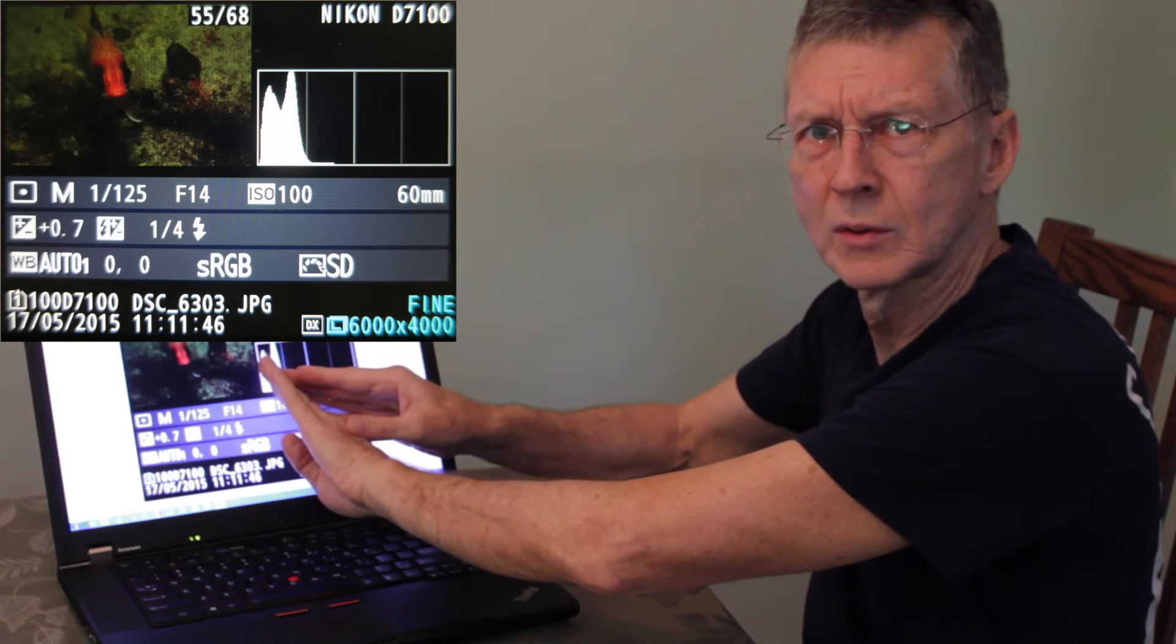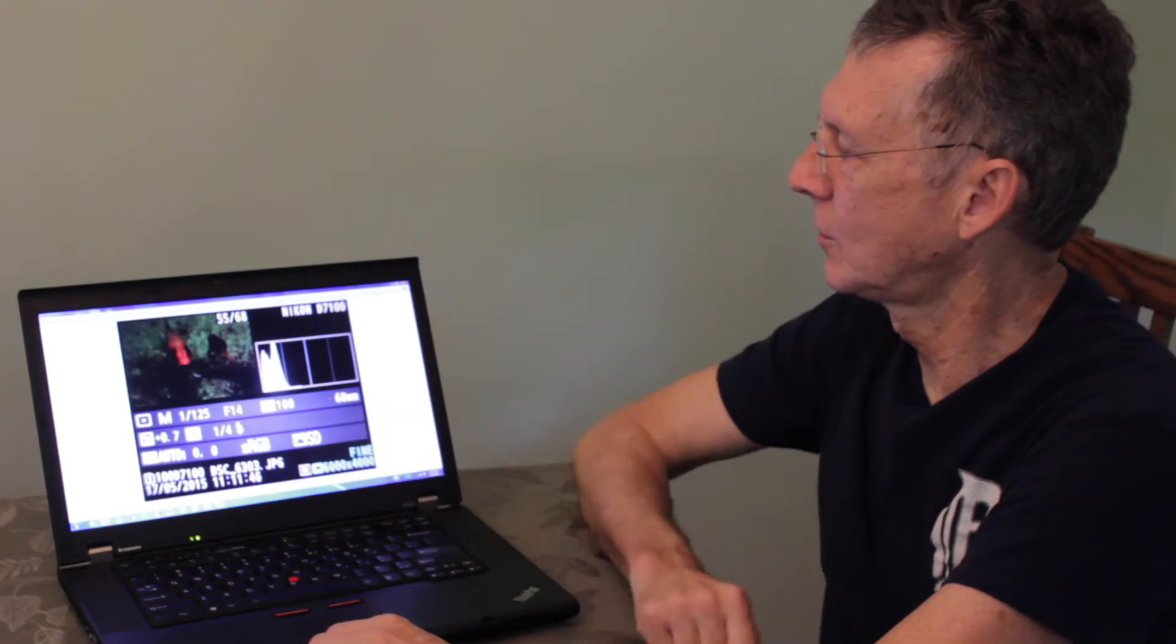But by looking at the histogram, a lot of the pixels are all toward the dark area. This picture is way too dark, it's underexposed. I need to turn my strobe power up or make it closer to the subject.